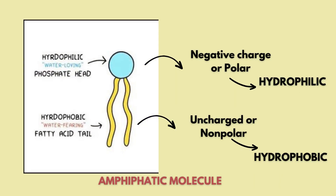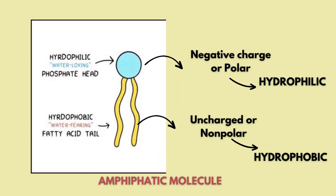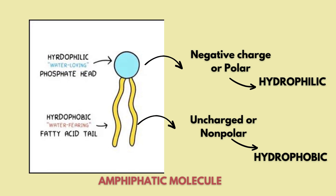In a single phospholipid molecule, there is a phosphate group and a lipid tail. In the phosphate group, we have the head, which is negatively charged and polar in nature. That means we call it a hydrophilic or water-loving molecule. This hydrophilic molecule is attracted to water and attaches to water-containing components.